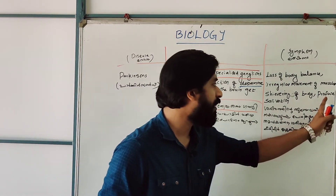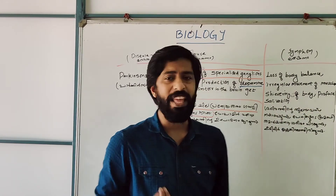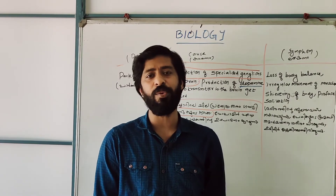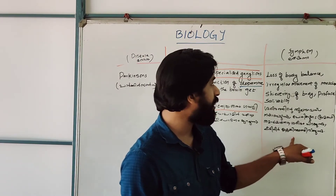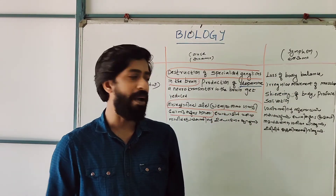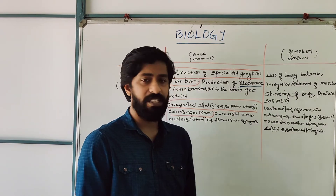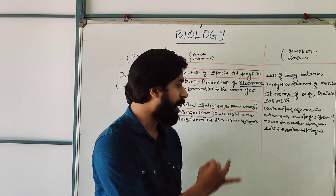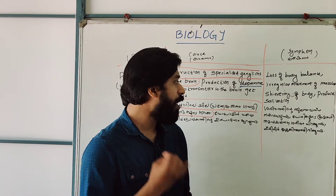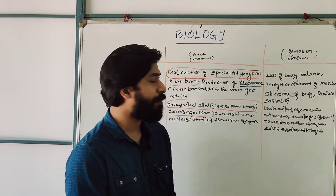The last symptoms of Parkinson's disease include profuse salivation and shivering of the body. To summarize: loss of body balance, irregular movements of muscles, shivering of the body, and profuse salivation are the symptoms of Parkinson's disease.